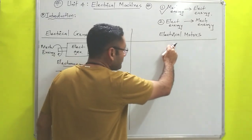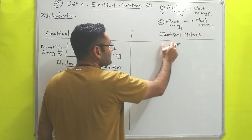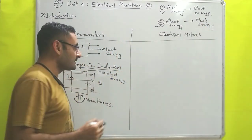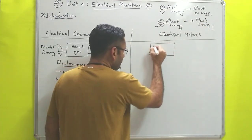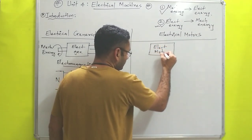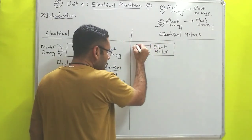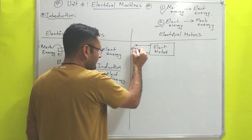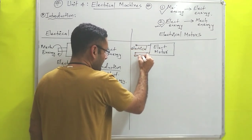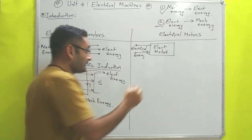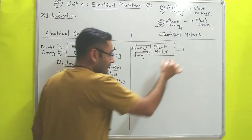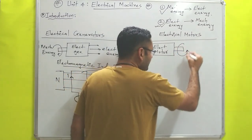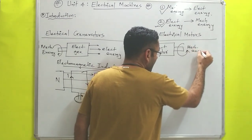Similarly, we will talk about electrical motors. An electric motor is such a device which will convert electrical energy into mechanical energy. Suppose we have an electrical motor — if we supply electricity to it, that is electrical energy. Whatever shaft the motor has will start to rotate, and that means we are getting mechanical work, that is mechanical energy.